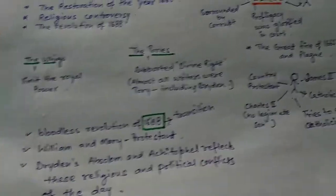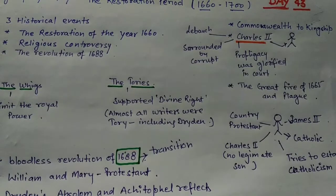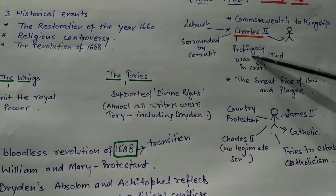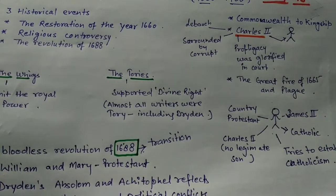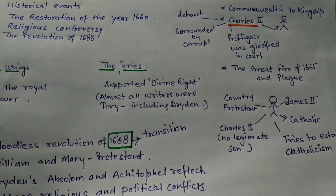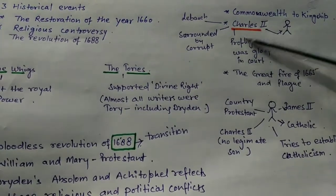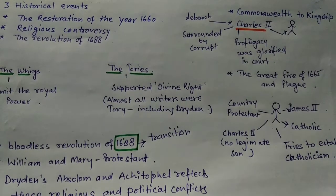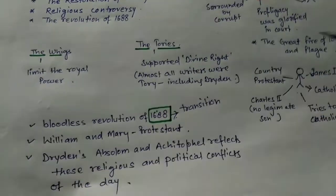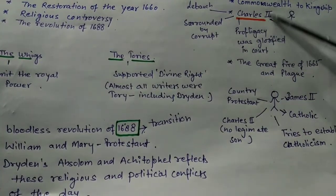Charles II was a debauched person — he was always surrounded by mistresses and corrupt people, and profligacy was glorified at his court. People were not creating meaningful things. Charles II was himself a bad person, and that's why he was losing his command over his country. There was also the Great Fire of 1665 and the Great Plague, but still Charles II was enjoying himself.